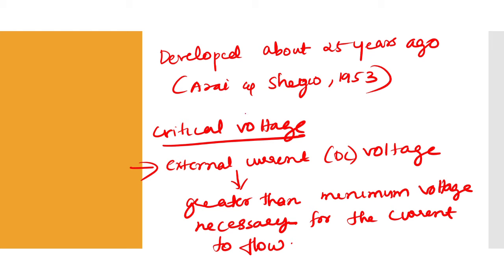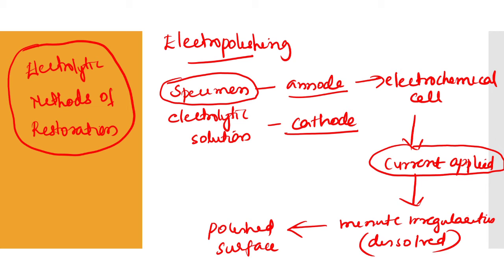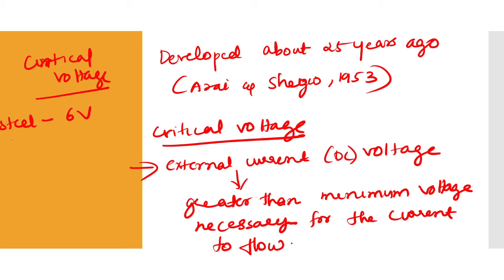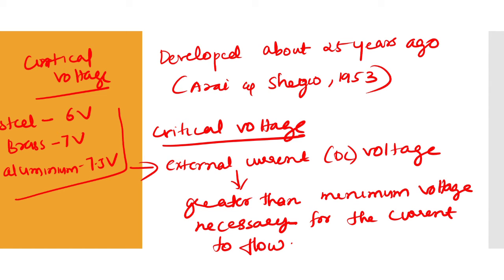The voltage applied to the electrochemical cell is a DC voltage that must be greater than the minimum voltage necessary for the current to flow — this is the critical voltage. The critical voltage is different for all metals. For steel it is approximately 6 volts, for brass it is approximately 7 volts, and for aluminium it is 7.5 volts.